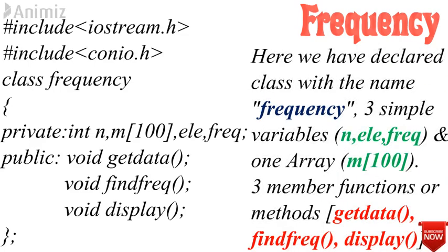Now consider a C++ class program to find the frequency of a number in a one-dimensional array. The class name is 'frequency' with data members: int n, m[100], ele, and freq. The variables n, ele, and freq are simple integer variables, and m[100] is an array variable, all declared under the private access specifier. Under the public access specifier we declare three member functions: getData, findFreq, and display.